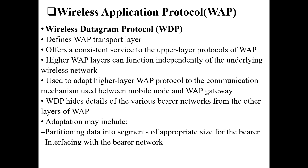WDP offers a consistent service to the upper layer protocols of WAP and functions independently of the underlying wireless network. It is used as a communication mechanism between the mobile node and the WAP gateway, hiding all the details of various bearer networks from other WAP layers — acting as a transport layer for node-to-node communication. WDP also handles partitioning data into segments of appropriate size for the bearer, distributing information across channels when necessary.